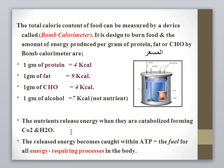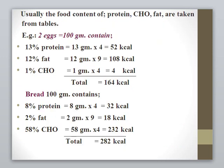The nutrients release energy when they are catabolized. Catabolism of food produces CO2 and water, and this releases energy. The energy is captured within ATP. ATP is the fuel for all energy-requiring processes in our body. The food content of protein, fat, and carbohydrate are taken from food composition tables.